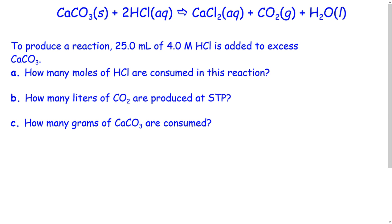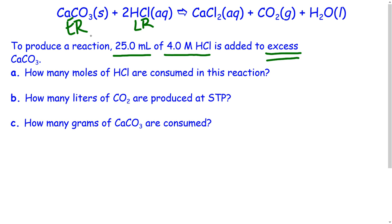From there you have to consider the information you're given. When we take calcium carbonate and hydrochloric acid, we are told specifically that 25 mL of a 4 molar HCl solution is added to excess calcium carbonate. Very important—that's telling us that hydrochloric acid is our limiting reagent and calcium carbonate is excess, so we don't have to figure out the limiting reagent. Parts A, B, and C ask us to find different things.